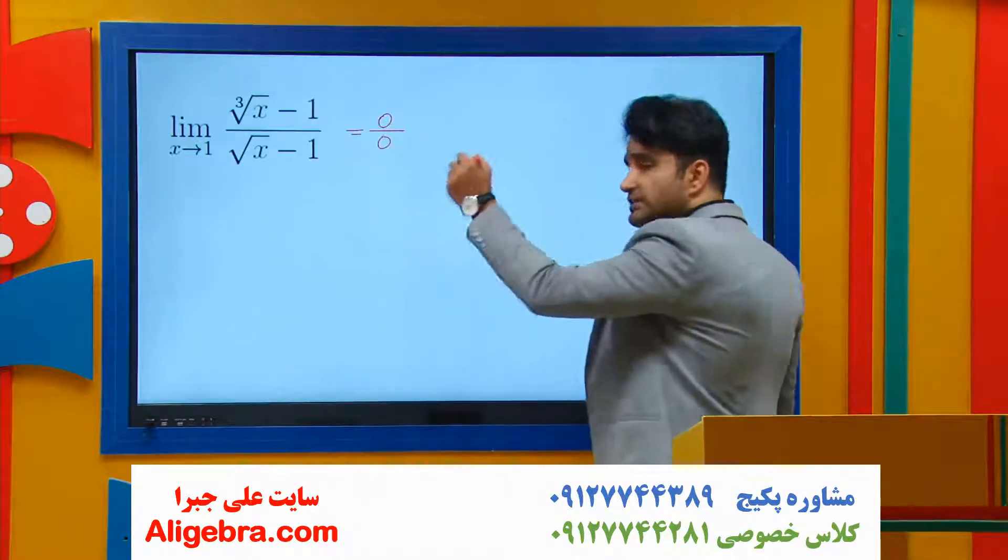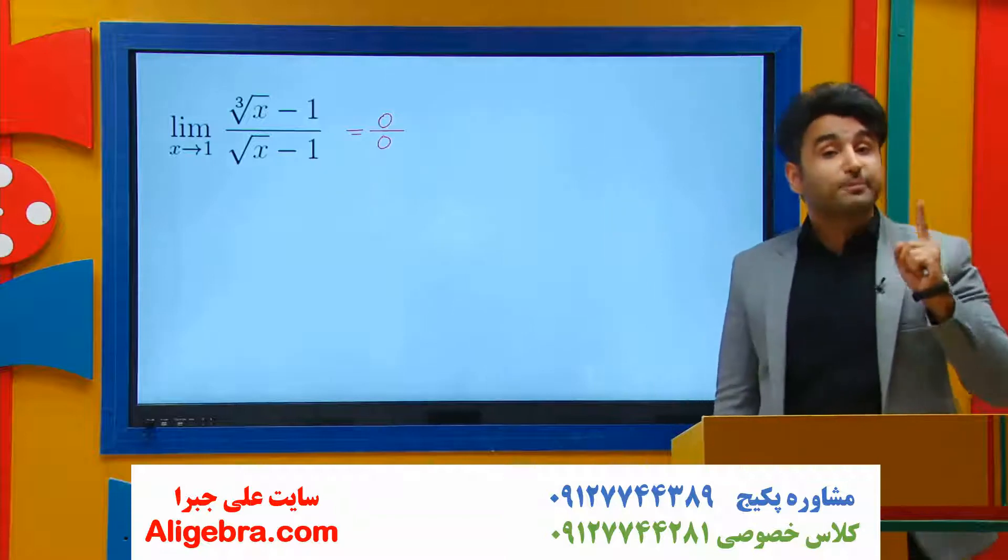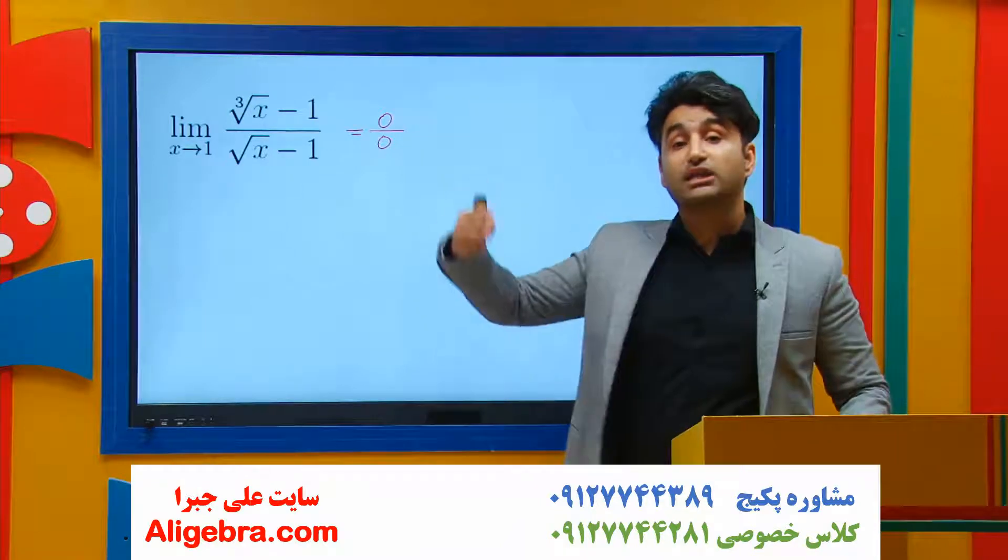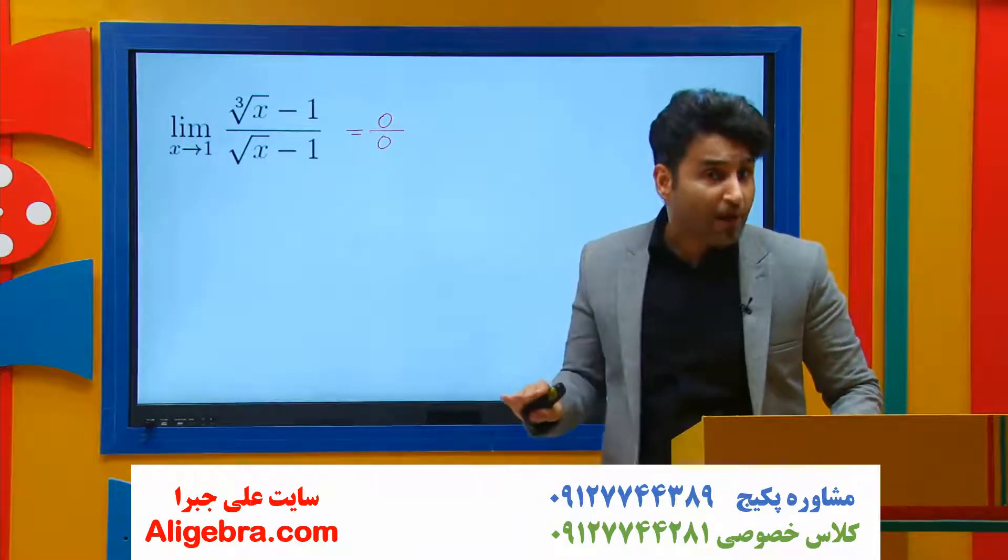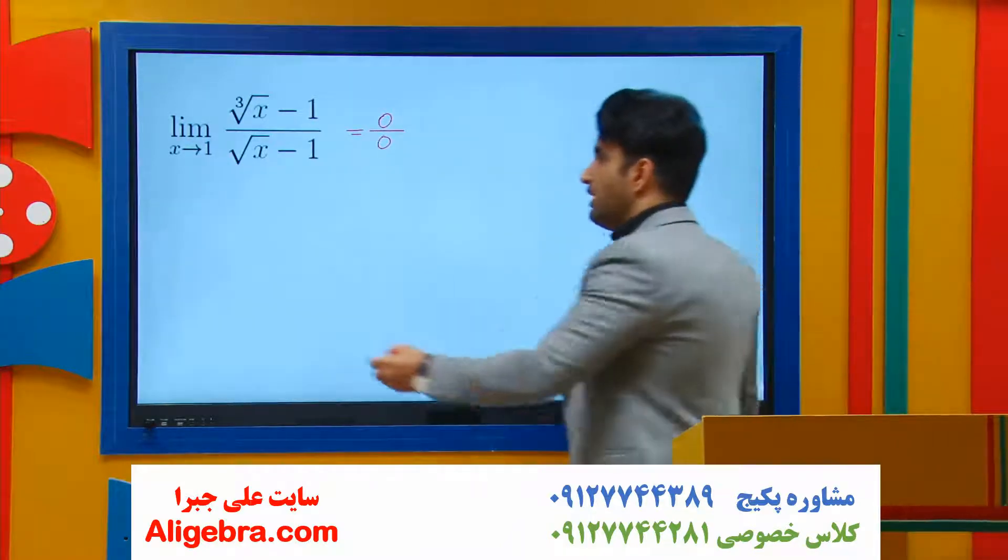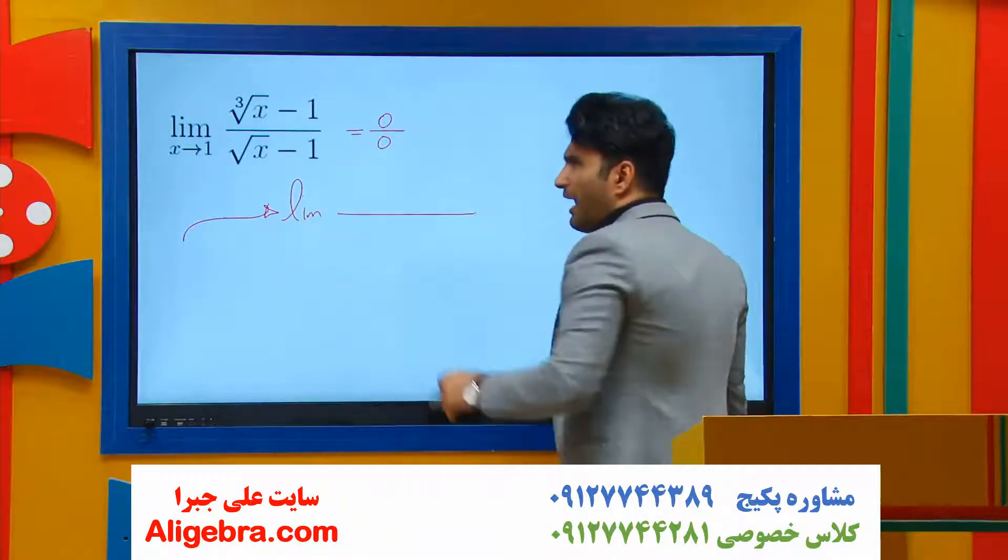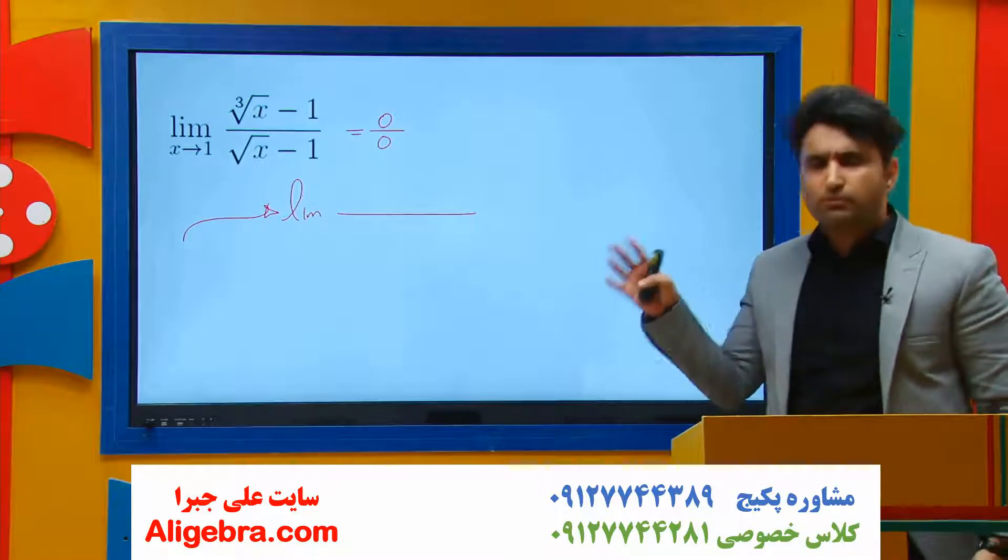0 over 0 in a limit gives us the permission to apply L'Hospital's rule. How? By taking derivative of top and bottom of the fraction separately. So I have the limit, the derivative on top. It seems to be a little difficult. No problem.